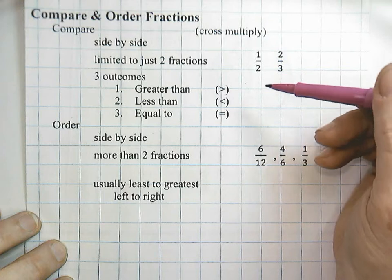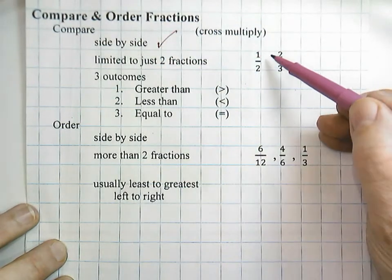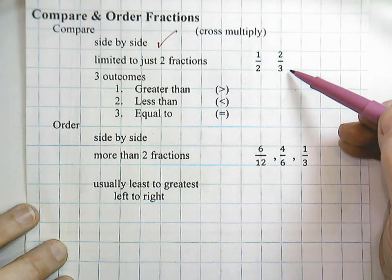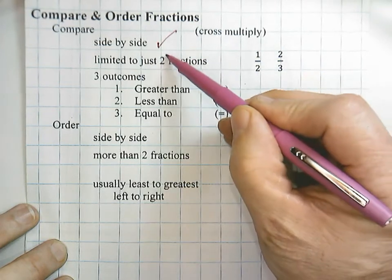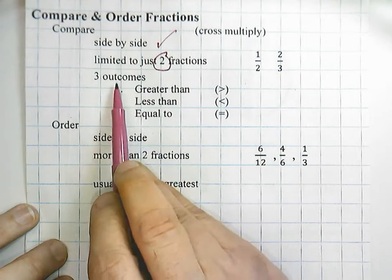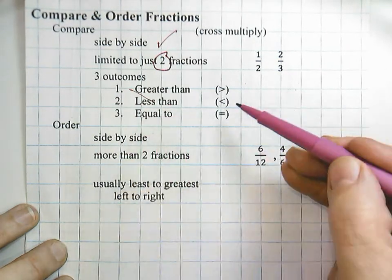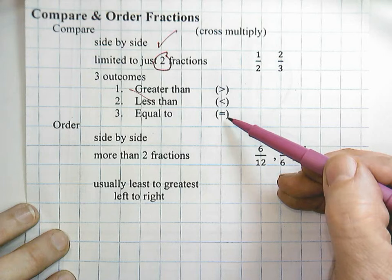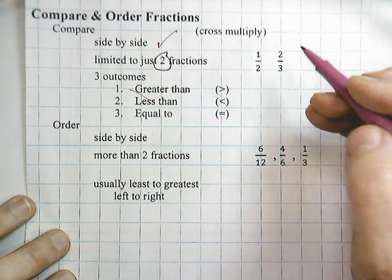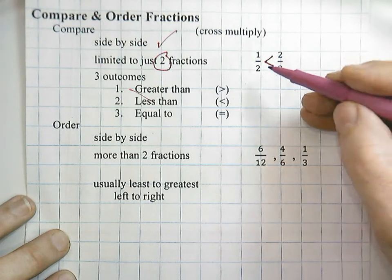When we compare and order fractions, compare just means to put side-by-side. For example, one-half and two-thirds — we put them side-by-side. Comparing means we're just doing two fractions. There are three outcomes: greater than, less than, or equal to. For example, one-half is less than two-thirds.